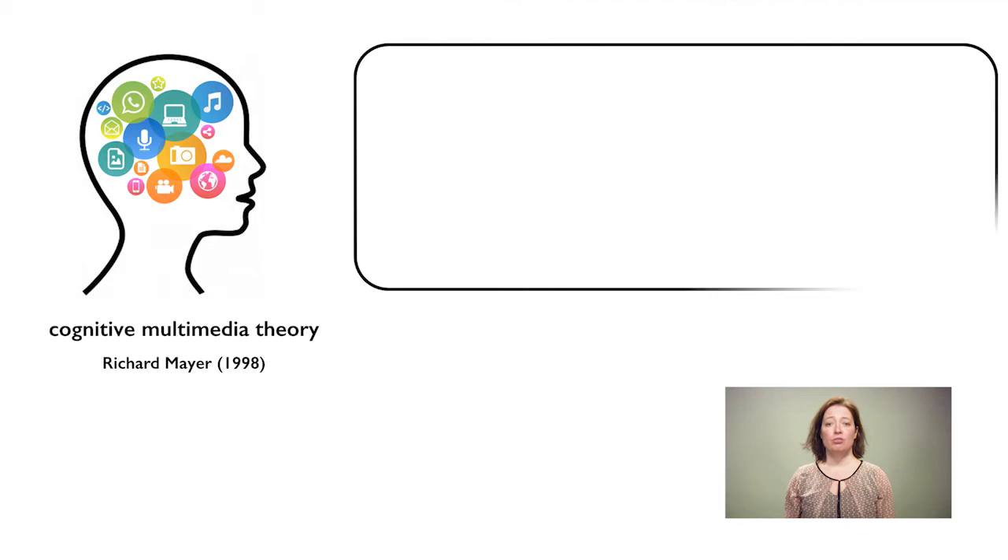In a nutshell, students learn more effectively from a combination of images with spoken text than from written text only. The cognitive multimedia theory combines two other theories: the cognitive load theory and the dual-code theory.